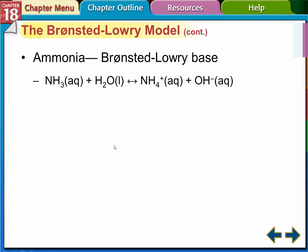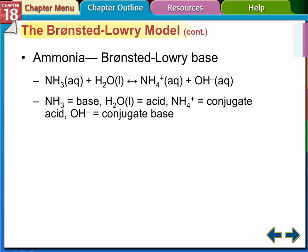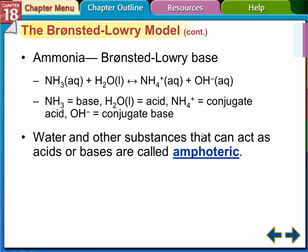Looking at ammonia plus water: ammonia accepts a hydrogen ion, going from NH3 to NH4-plus. The water gave up one of its hydrogens and became a hydrogen ion donor. So NH3 is the base because it accepted a hydrogen ion, and water is the acid because it gave up the H ion. Whatever was the base becomes the conjugate acid; whatever was the acid becomes the conjugate base. Water is amphoteric — it can act as either an acid or a base.